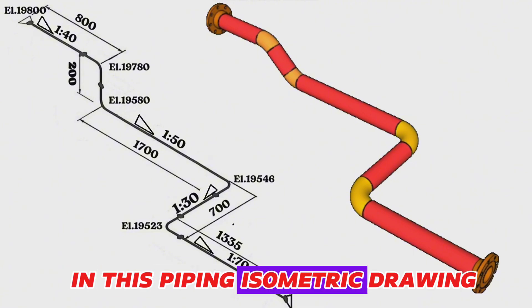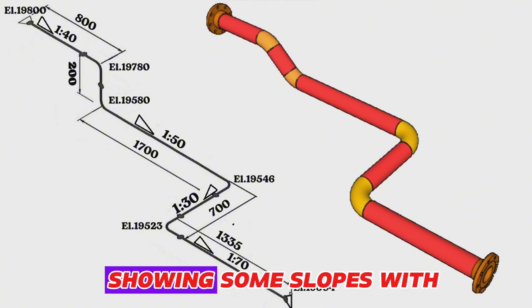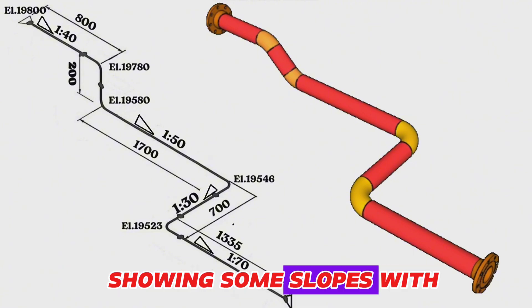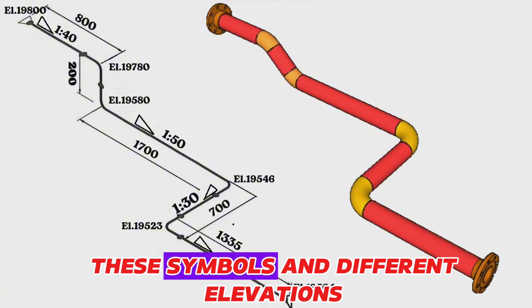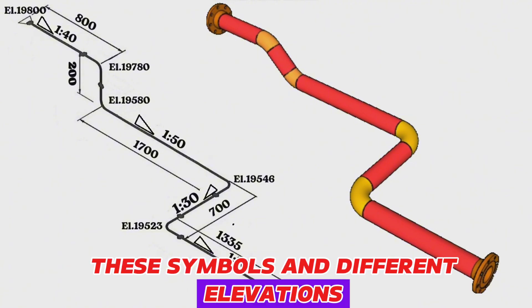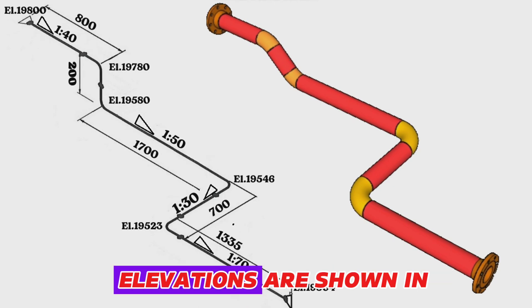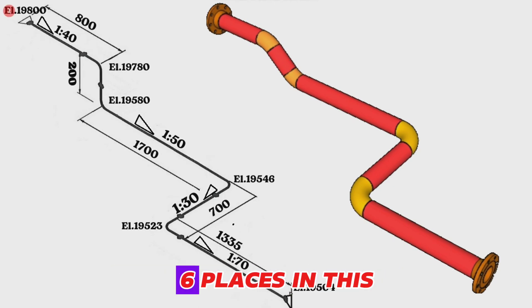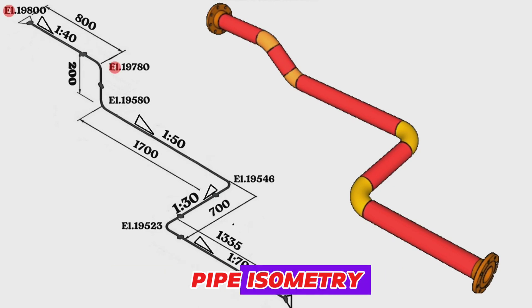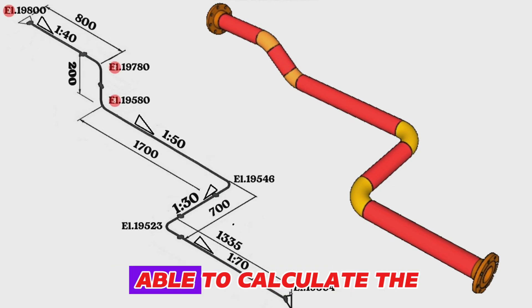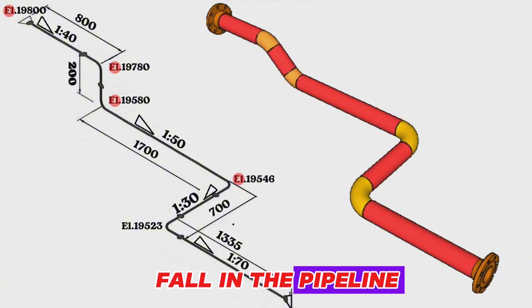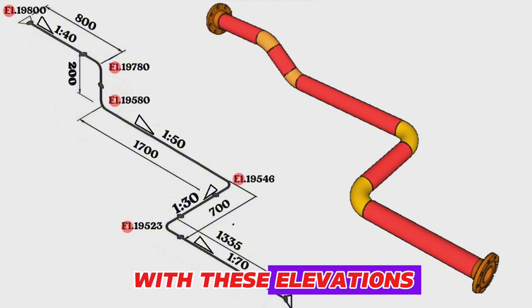In this piping isometric drawing, slopes are shown with specific symbols and different elevations. Elevations are shown in 6 places in this pipe isometry, and we will be able to calculate the fall in the pipeline with these elevations.